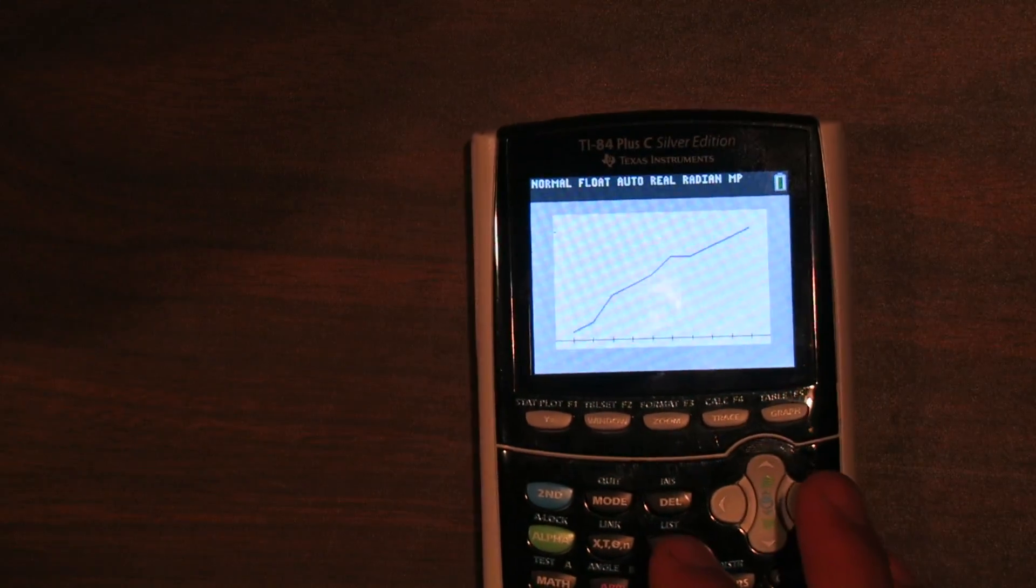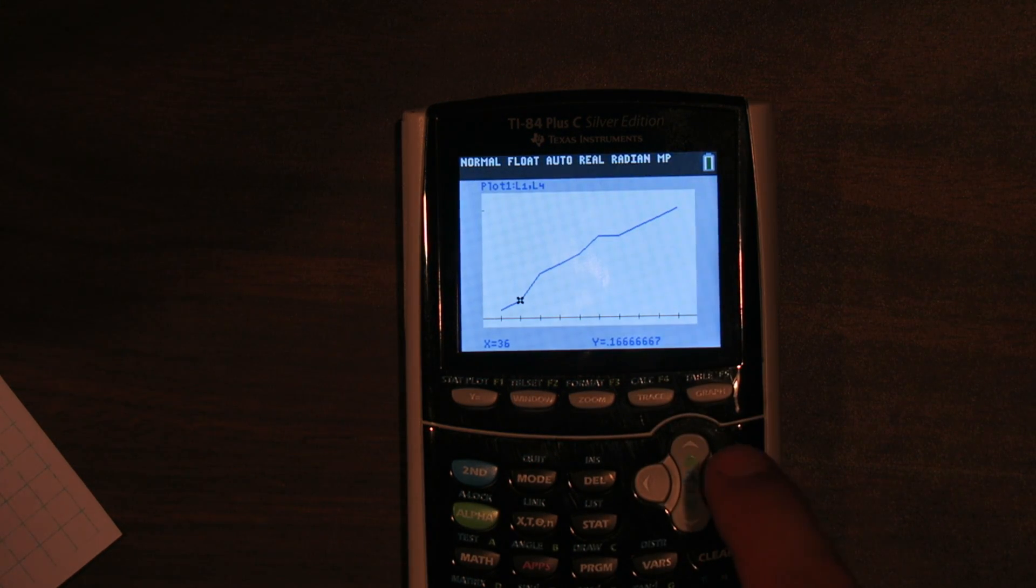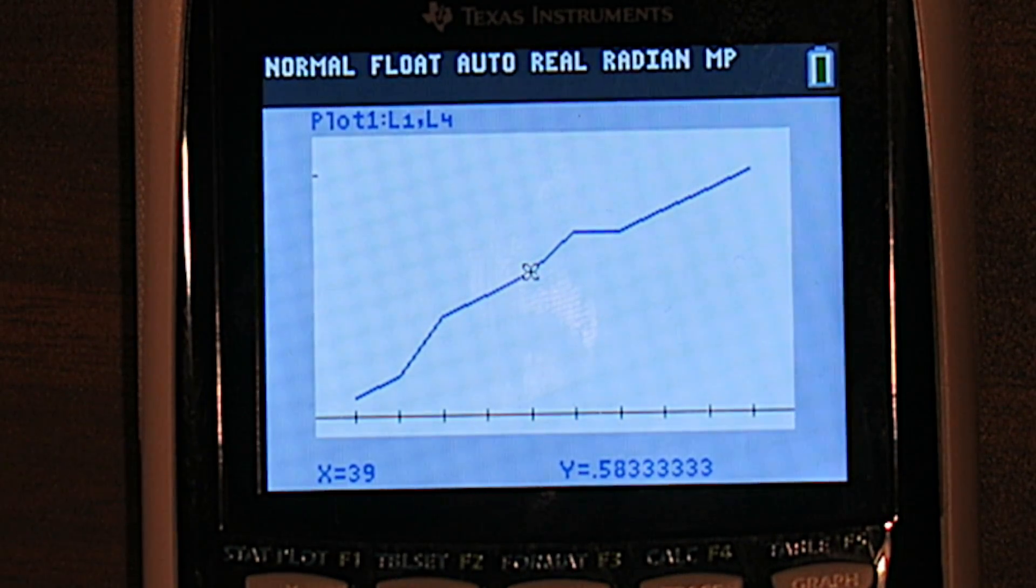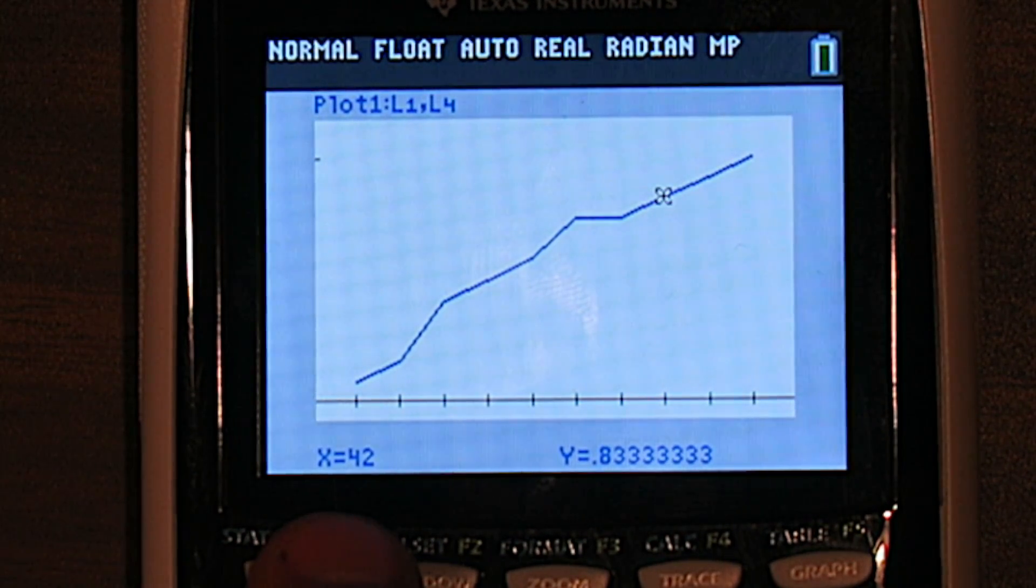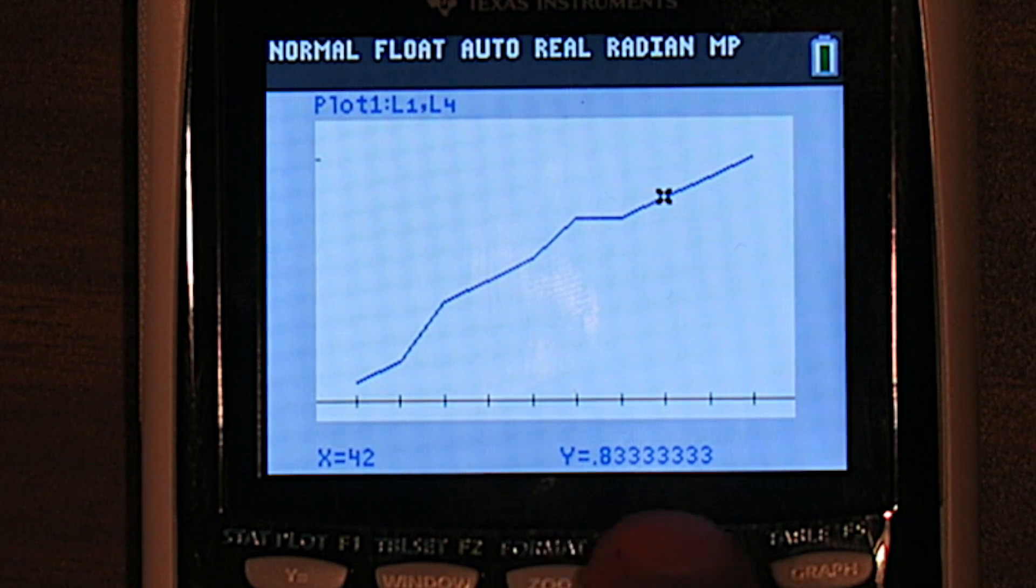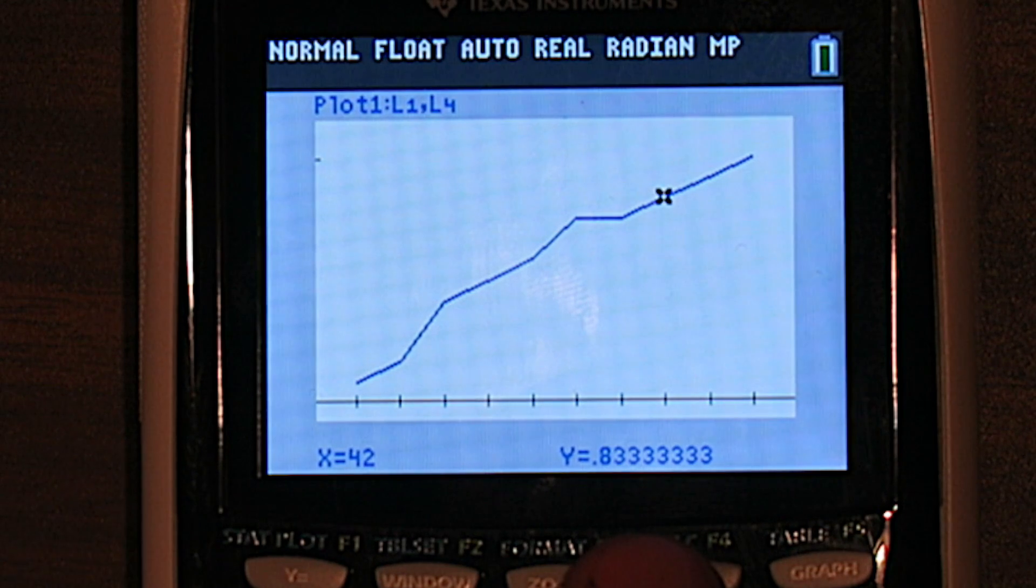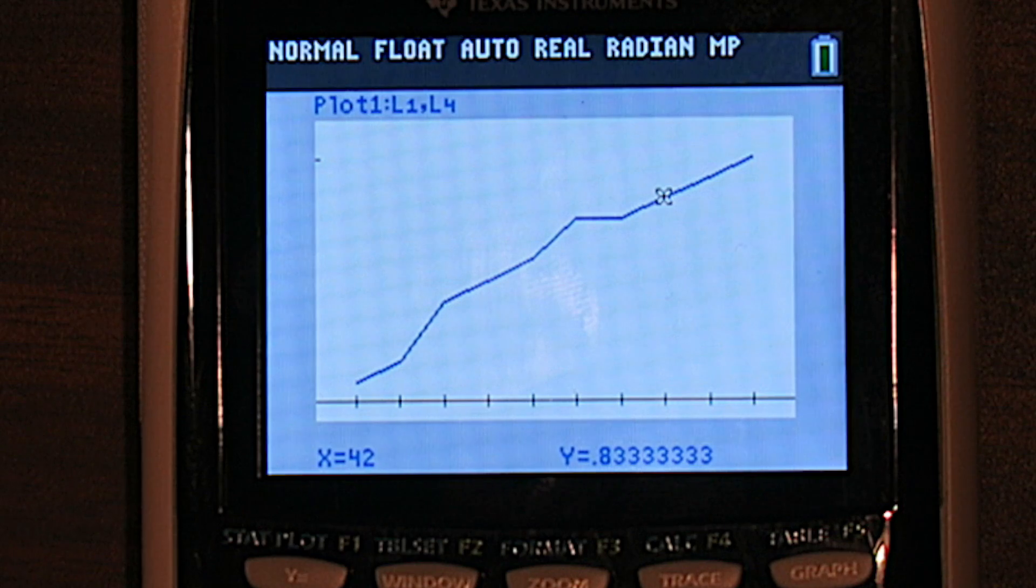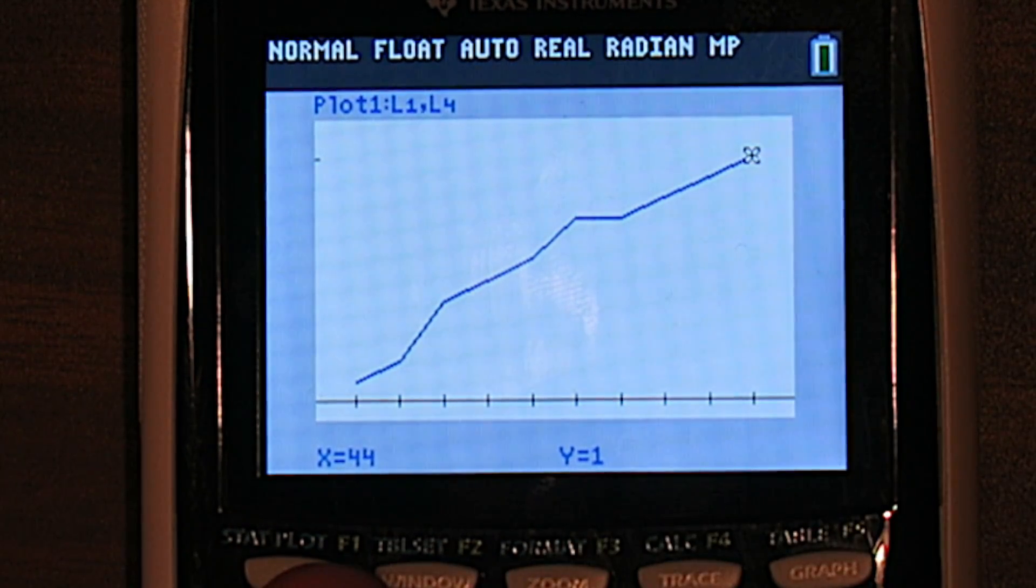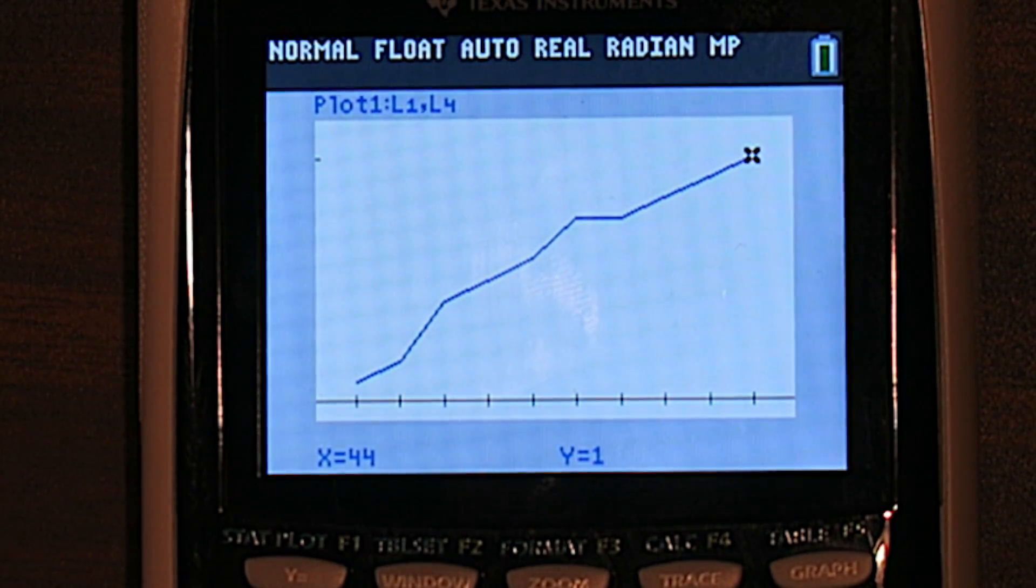And a really neat thing you can do with these ogives is if you press the trace button, which is right here, as you scroll along with the arrows, it will tell you things. Like right here, it says at 42, our y-coordinate is 0.83 repeating. So what that means is 83 and 1/3 percent of our acorns were 42 millimeters or less. And if we get all the way to the 44, this is saying 100% of our acorns are 44 millimeters or less. That's how you make an ogive on a TI-84.